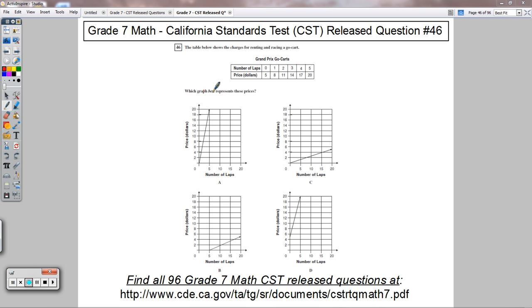Alright, so which graph best represents these prices? I'm looking for number of laps being 0 and the price in dollars being 5. If I look at choice A, if I start at 0 laps, it's not charging me anything, so it's not choice A.